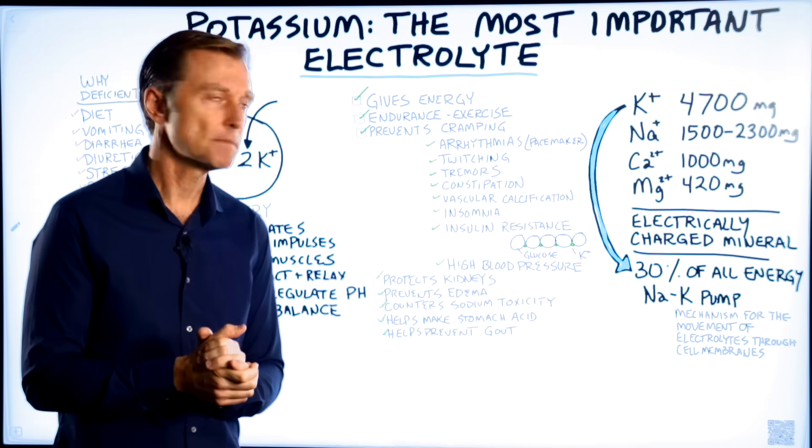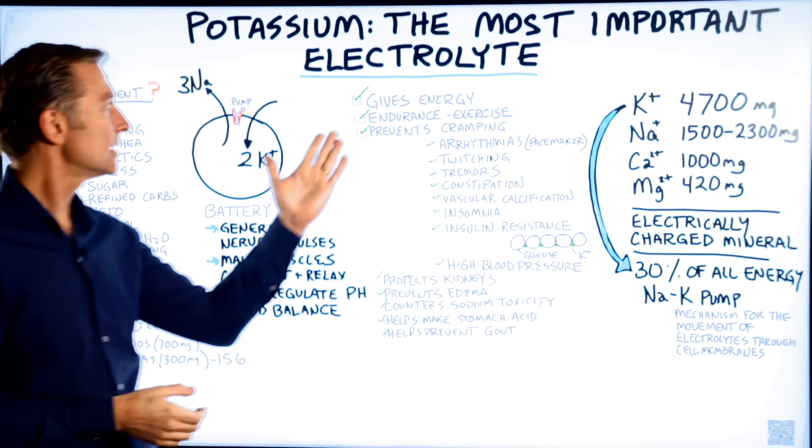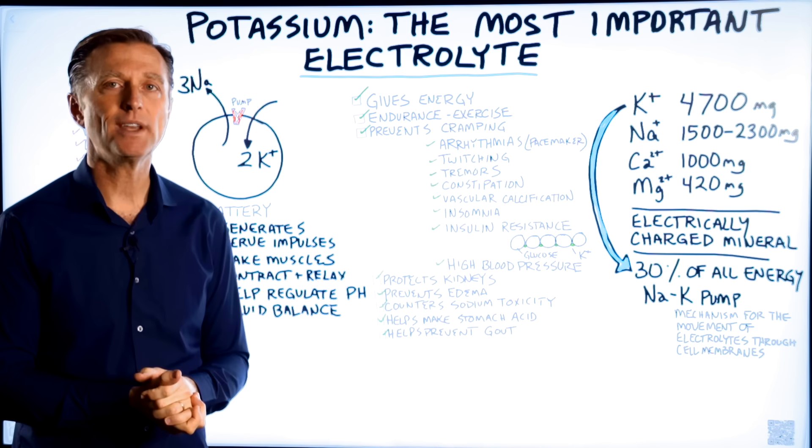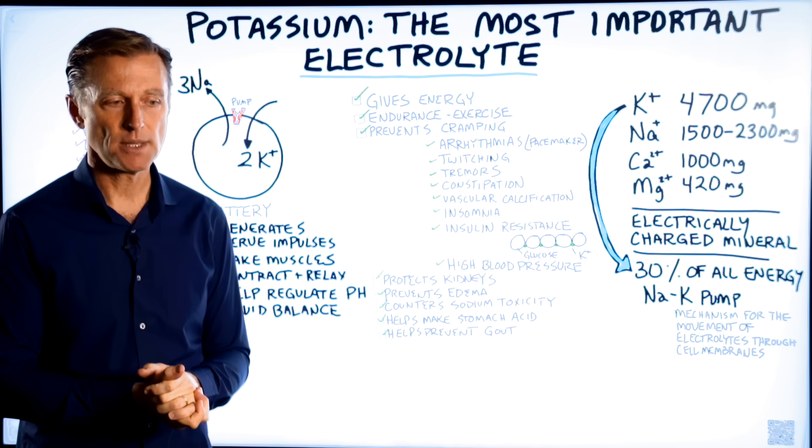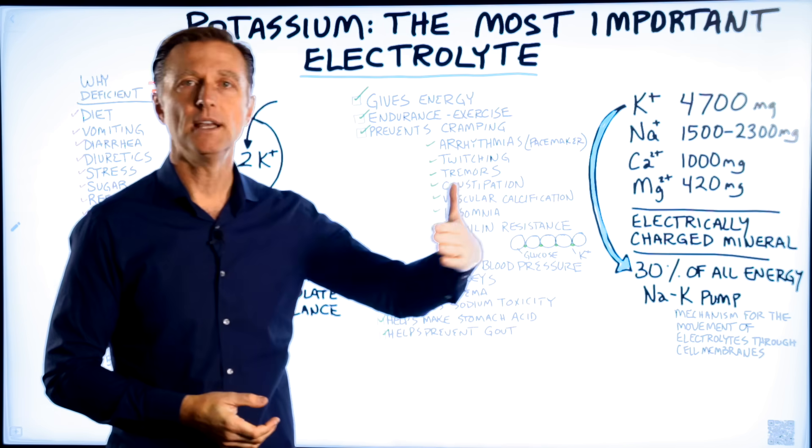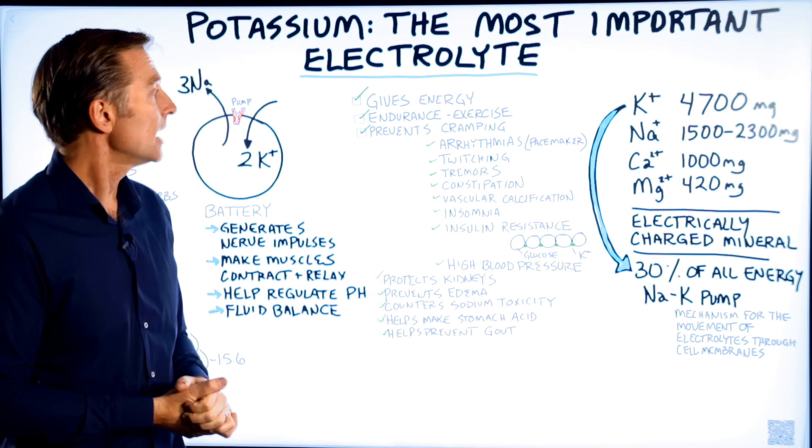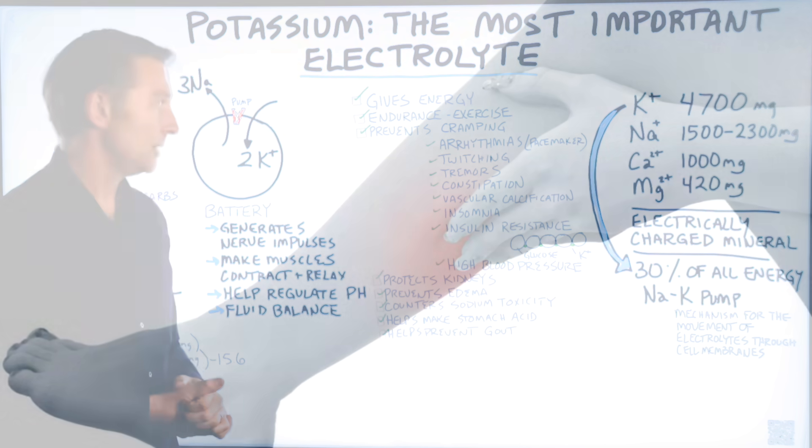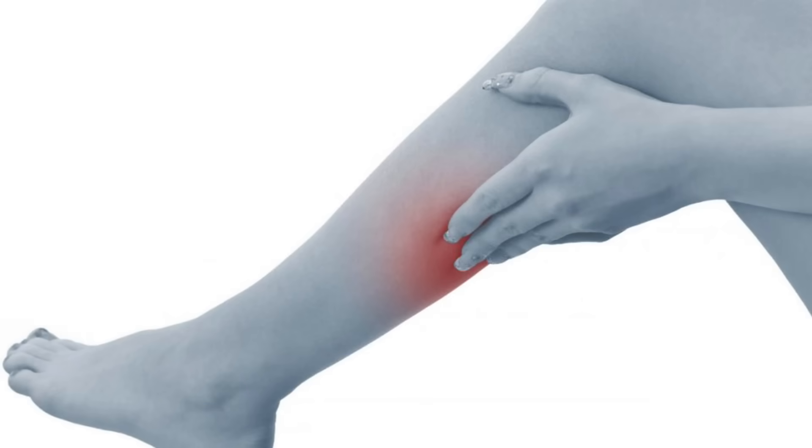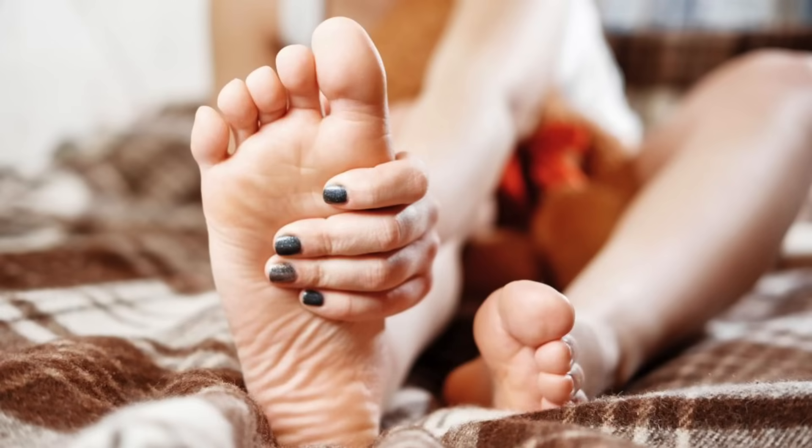So what does potassium do? Well, it keeps us energetic. It gives us endurance when we exercise. If you're low on potassium, you will not be able to go as far when you exercise. It also prevents cramping, like the cramps that you get in your calves or your feet. Now, it could also be magnesium as well.